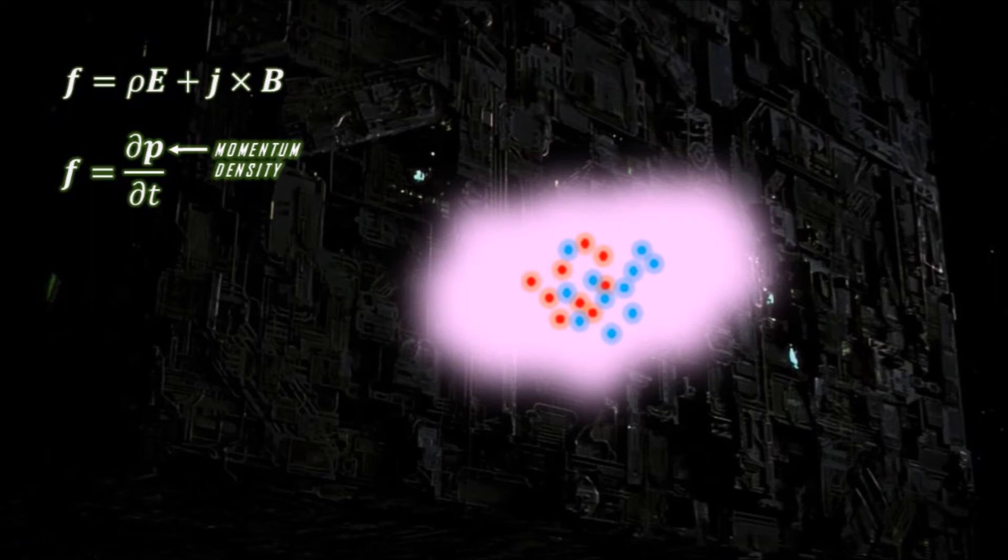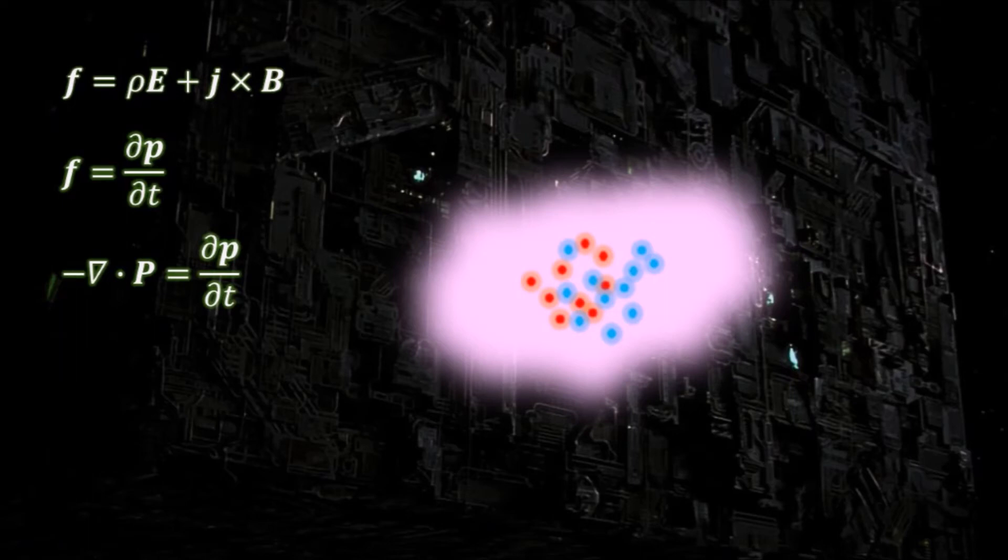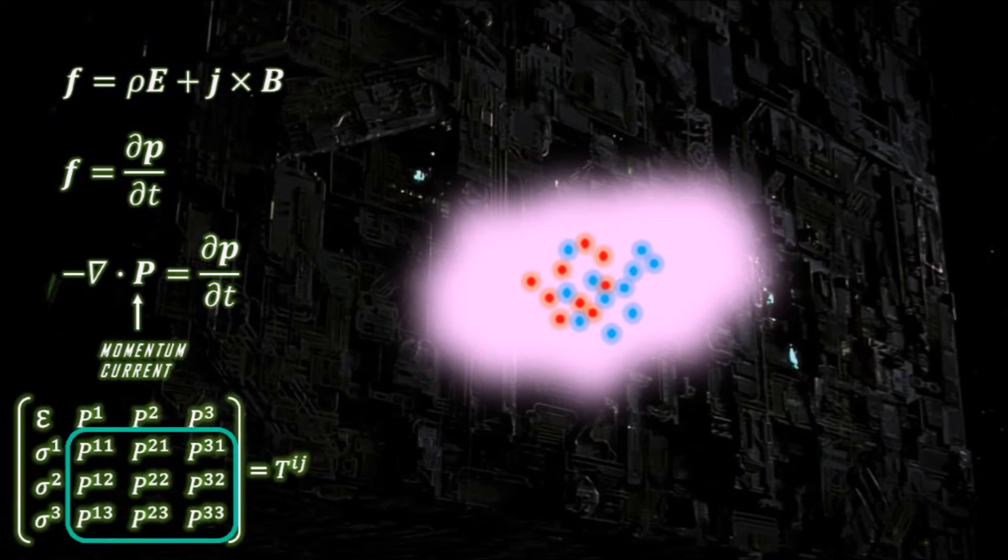This momentum loss or gain is described by the conservation equation, where capital P is the momentum current located in this section of the energy-momentum tensor for the charges. Combining these two sources of momentum change, we get this equation.